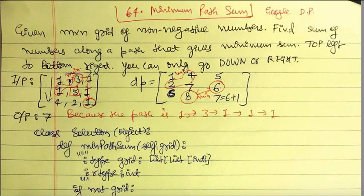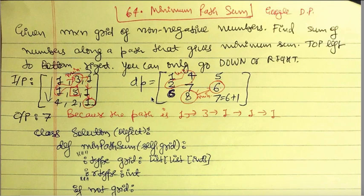For the first row, reaching the second element (3) costs 3 plus 1 = 4, so each DP element represents the minimum cost of reaching that point. The minimum cost for reaching the last element in the first row is 1+3+1 = 5. For the first column, the minimum cost for reaching the second element is 1+1 = 2, and for the element below that (4), it's 1+1+4 = 6.